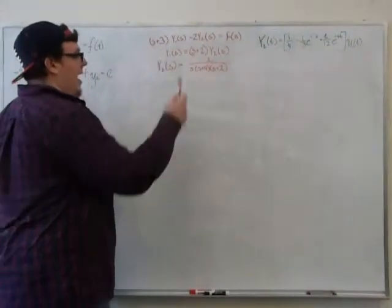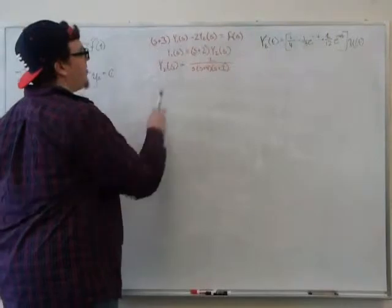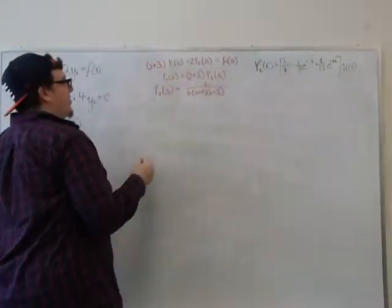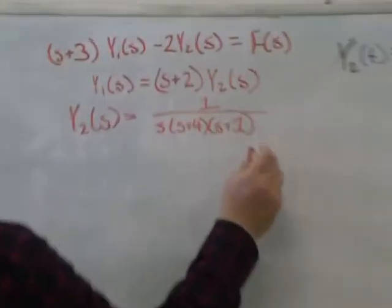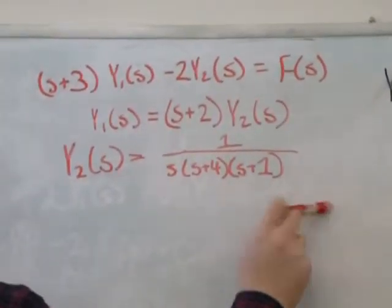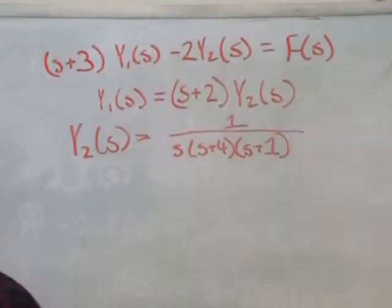Now, we have y2(t), we want y1(t). And we have this nice relationship here. We know y2(s) in just s and constants. And we know what y1 is in terms of y2.